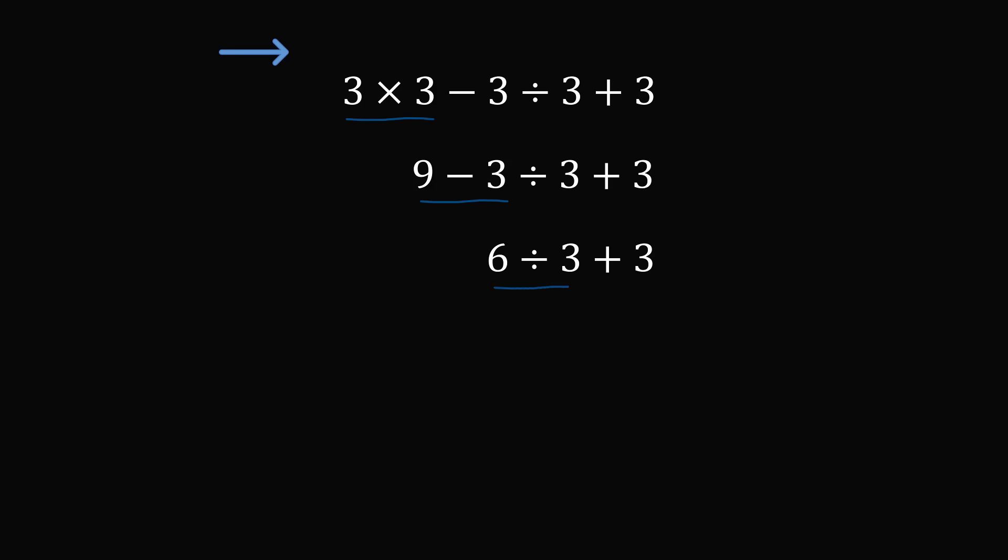Then 6 divided by 3 is equal to 2. And finally, 2 plus 3 is equal to 5. There were many people who thought 5 is the correct answer. But I would say this is not correct according to the modern interpretation of the order of operations.